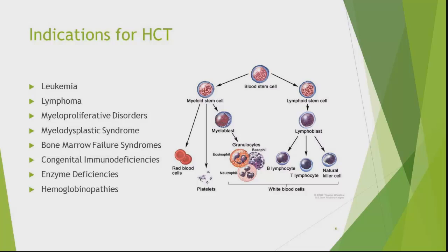What are some indications for stem cell transplant? Looking at the diagram of blood stem cell differentiation into myeloid and lymphoid lineages, any abnormality in any of these can cause a problem. Potential indications include leukemia, lymphoma, myeloproliferative disorders, myelodysplastic syndrome, bone marrow failure, congenital immunodeficiency such as common variable immune deficiency and DiGeorge syndrome, enzyme deficiencies, and hemoglobinopathies. These are some of the common indications for stem cell transplant.